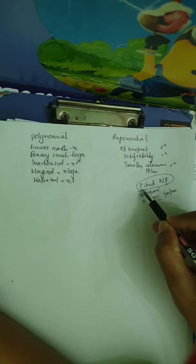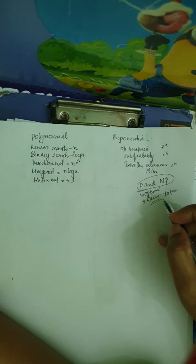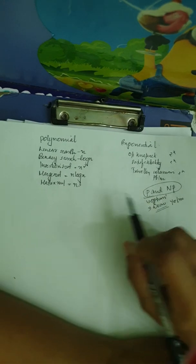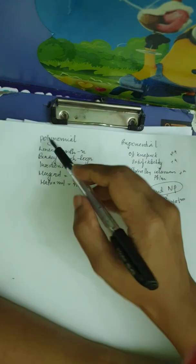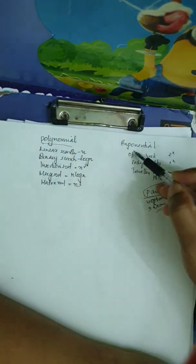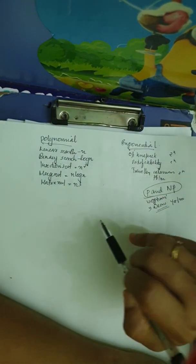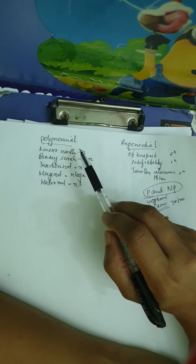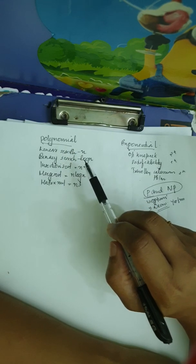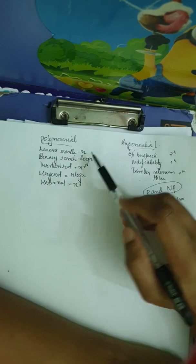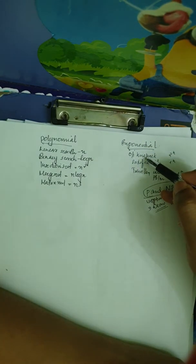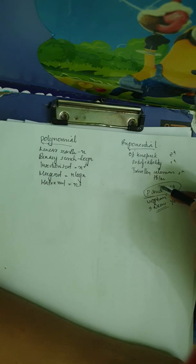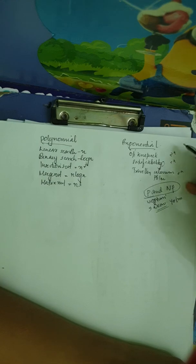We are going to focus on P and NP problems — two sets of problems. One is polynomial time solving and the other is exponential time solving. Polynomial time represents the best algorithm. Exponential time solving includes problems like the 0/1 knapsack problem, satisfiability problem, and the traveling salesman problem. The time complexity for those is 2 raised to the power n.